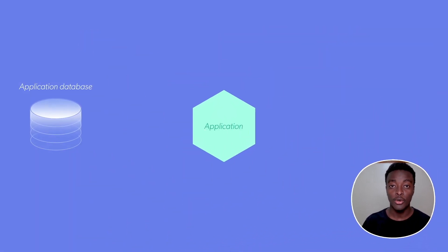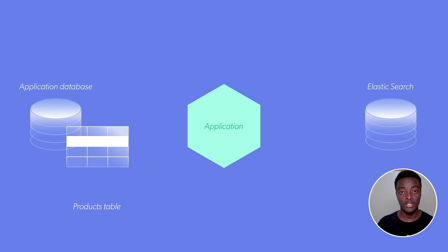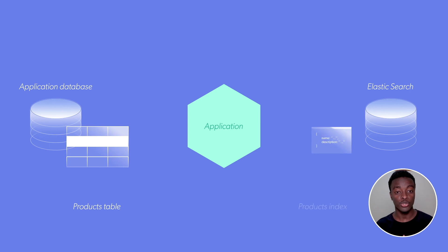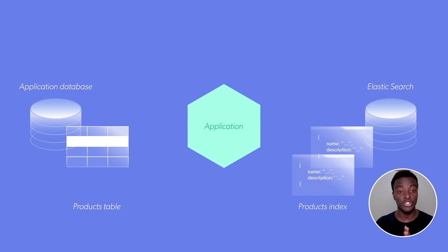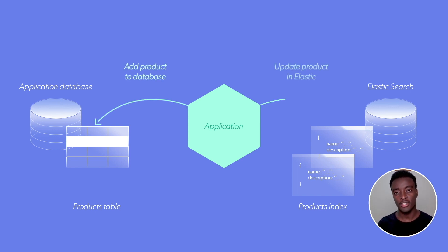As developers, we know that search is a solved problem. We introduce a dedicated search database such as Elasticsearch or a search service like Algolia. Then we ensure to write the product's name and description to the search database so that we can leverage the advanced search functionality to deliver a better user experience and solve the problem. Right? Well, no. Unfortunately, it's not that simple.